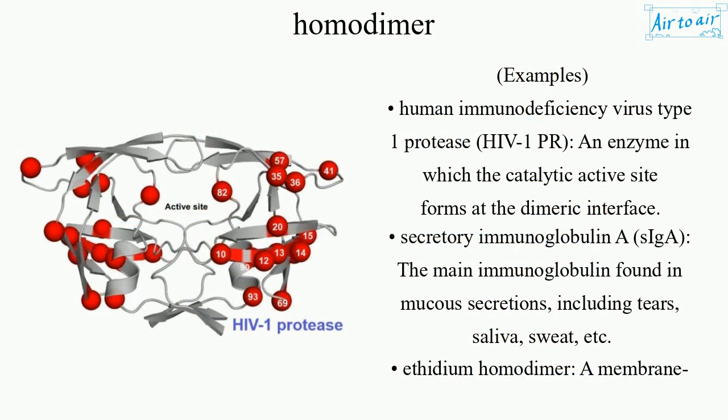Examples: Human Immunodeficiency Virus Type 1 Protease (HIV-1 PR), an enzyme in which the catalytic active site forms at the dimeric interface.